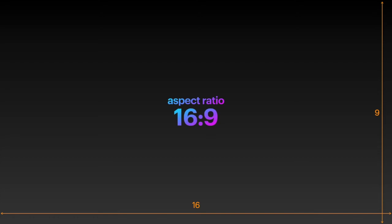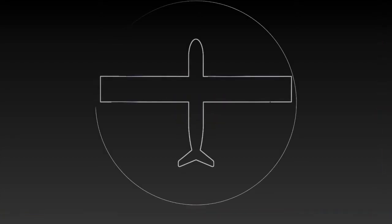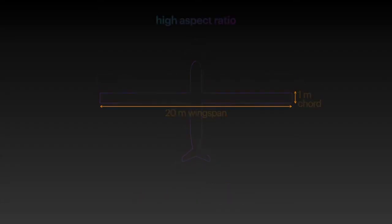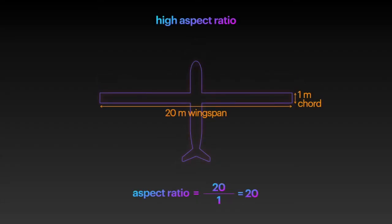The aspect ratio of this video is 16 to 9. This rectangular wing of an aeroplane has an aspect ratio as well. It's defined as the wingspan divided by its chord. If the wing has a 20 metre wingspan and a 1 metre chord, the aspect ratio is 20.